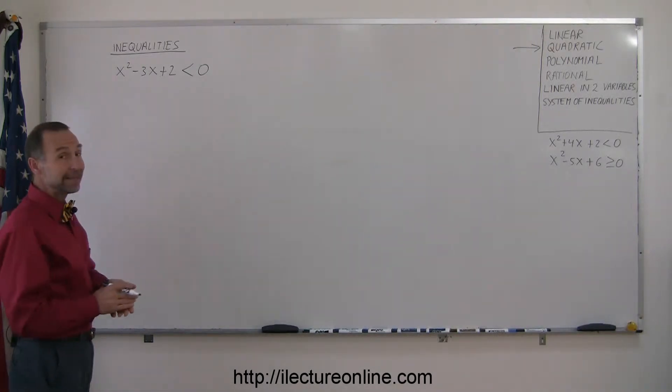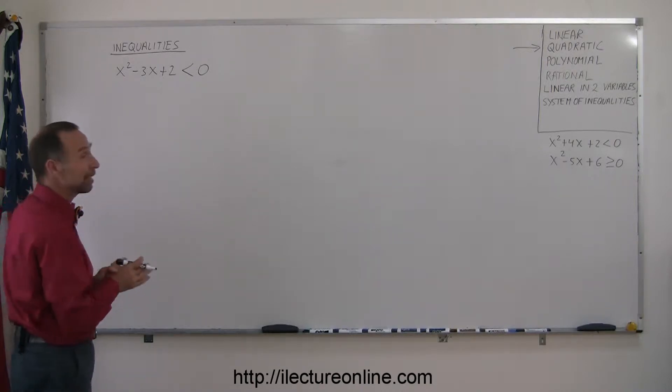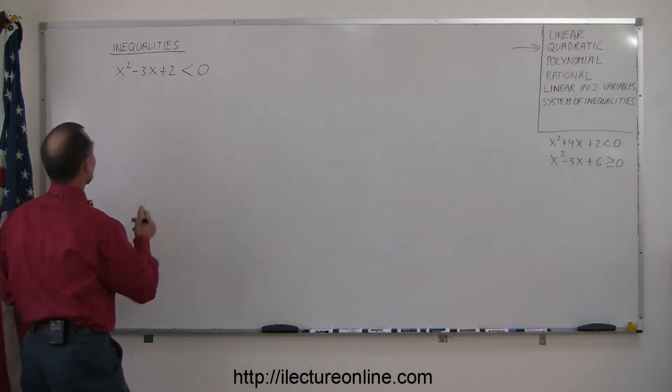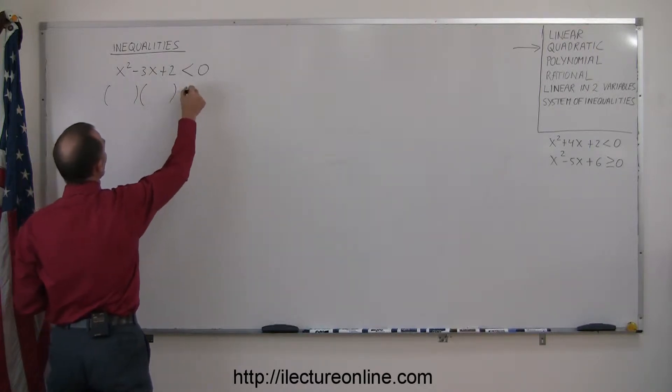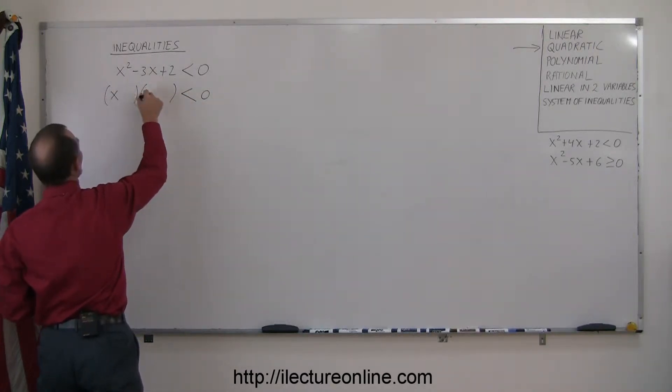So the best way to deal with this is to first factor the left side if it's factorable. In this case, it looks like it's factorable. We can write it as a product of two binomials. So we write an x and an x.